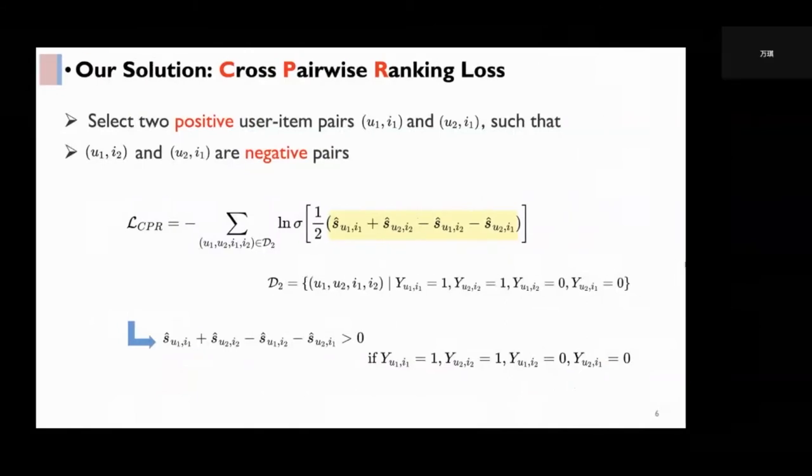Each training sample of CPR consists of two users and two items. We construct a sample by selecting two positive user-item pairs, U1-I1 and U2-I2, such that U1-I2 and U2-I1 are two negative pairs.